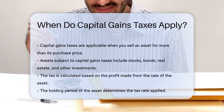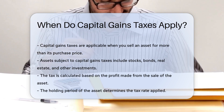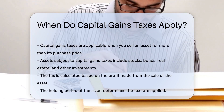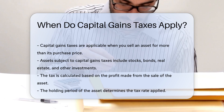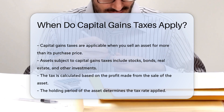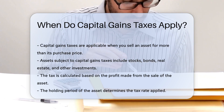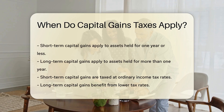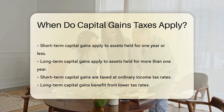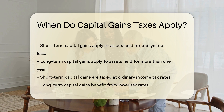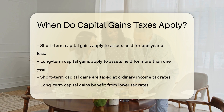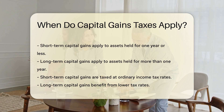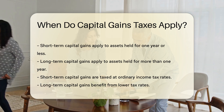The holding period of the asset affects the tax rate. Short-term capital gains apply if you hold the asset for one year or less, while long-term capital gains apply if you hold the asset for more than one year. Short-term capital gains are taxed at ordinary income tax rates, whereas long-term capital gains benefit from lower tax rates. The specific rates depend on your taxable income and filing status.